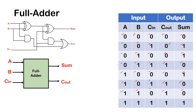For the last combination, A=1, B=1. The sum is 0 with carry 1. Not forgetting C-in: 0 add 1 is 1. Bring the carry down, so sum is 1 and the carry is also 1, so carry-out is 1. That's the operation of a full adder.